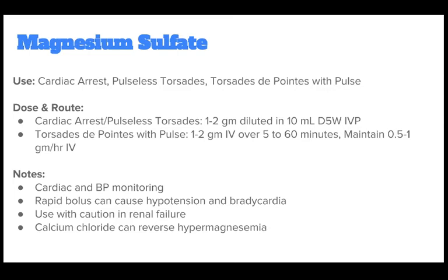Magnesium sulfate should be used for cardiac arrest, pulseless torsades de pointes, and torsades de pointes with pulse. For cardiac arrest and pulseless torsades, the dose is 1-2 gm diluted in 10 mL D5W IVP. For torsades de pointes with pulse, 1-2 gm IV over 5-60 minutes; maintain 0.5-1 gm per hour IV. Notes: cardiac and BP monitoring; rapid bolus can cause hypotension and bradycardia; use with caution in renal failure; calcium chloride can reverse hypermagnesemia.